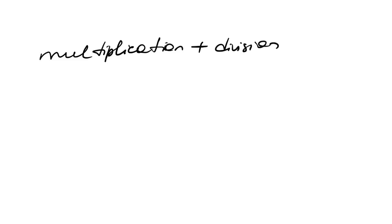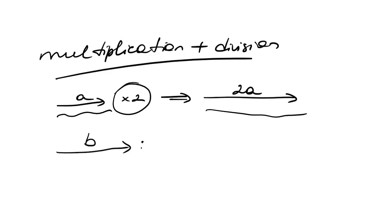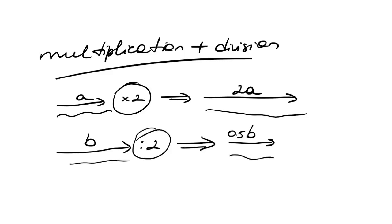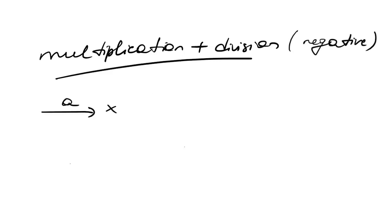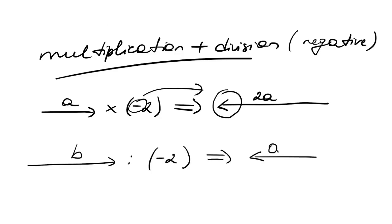Vector multiplication and division: if a vector is multiplied by a positive scalar — here it is 2 — its magnitude is increased by that amount. But in division, if it is divided by a positive scalar, its magnitude is decreased by that amount — here it is divided by 2. When you multiply or divide these vectors by a negative scalar, the magnitude will be the same but the direction will change.